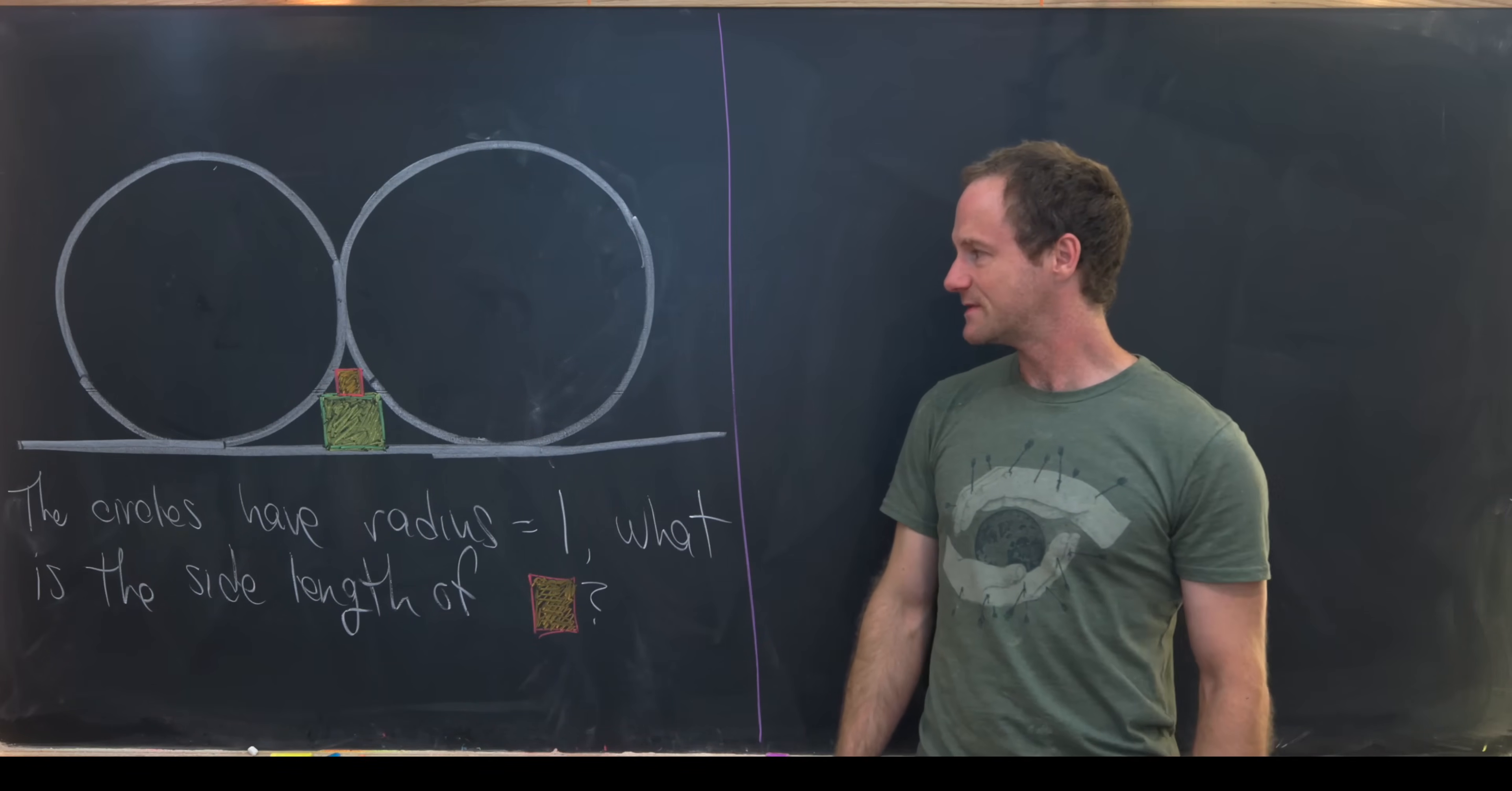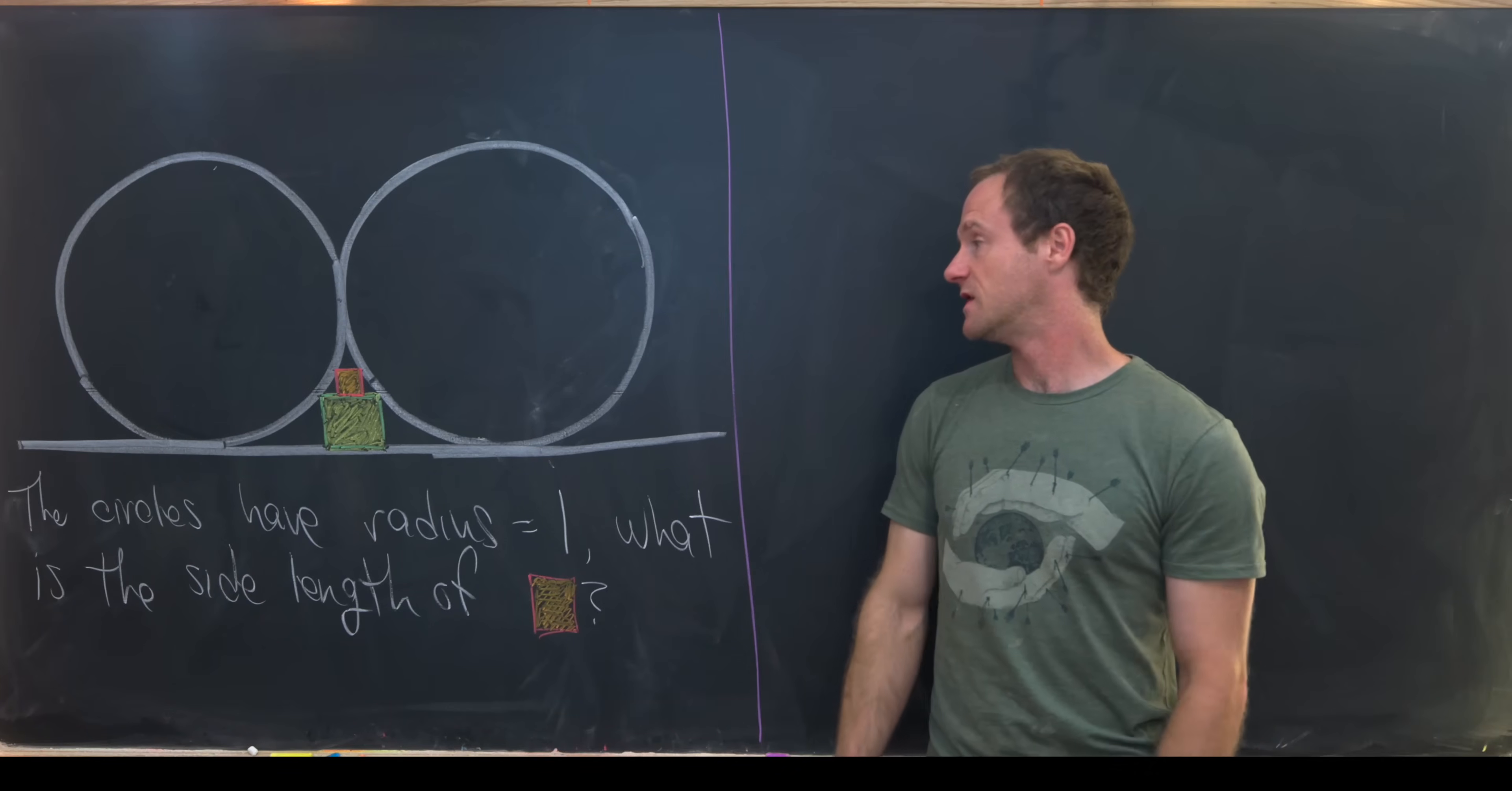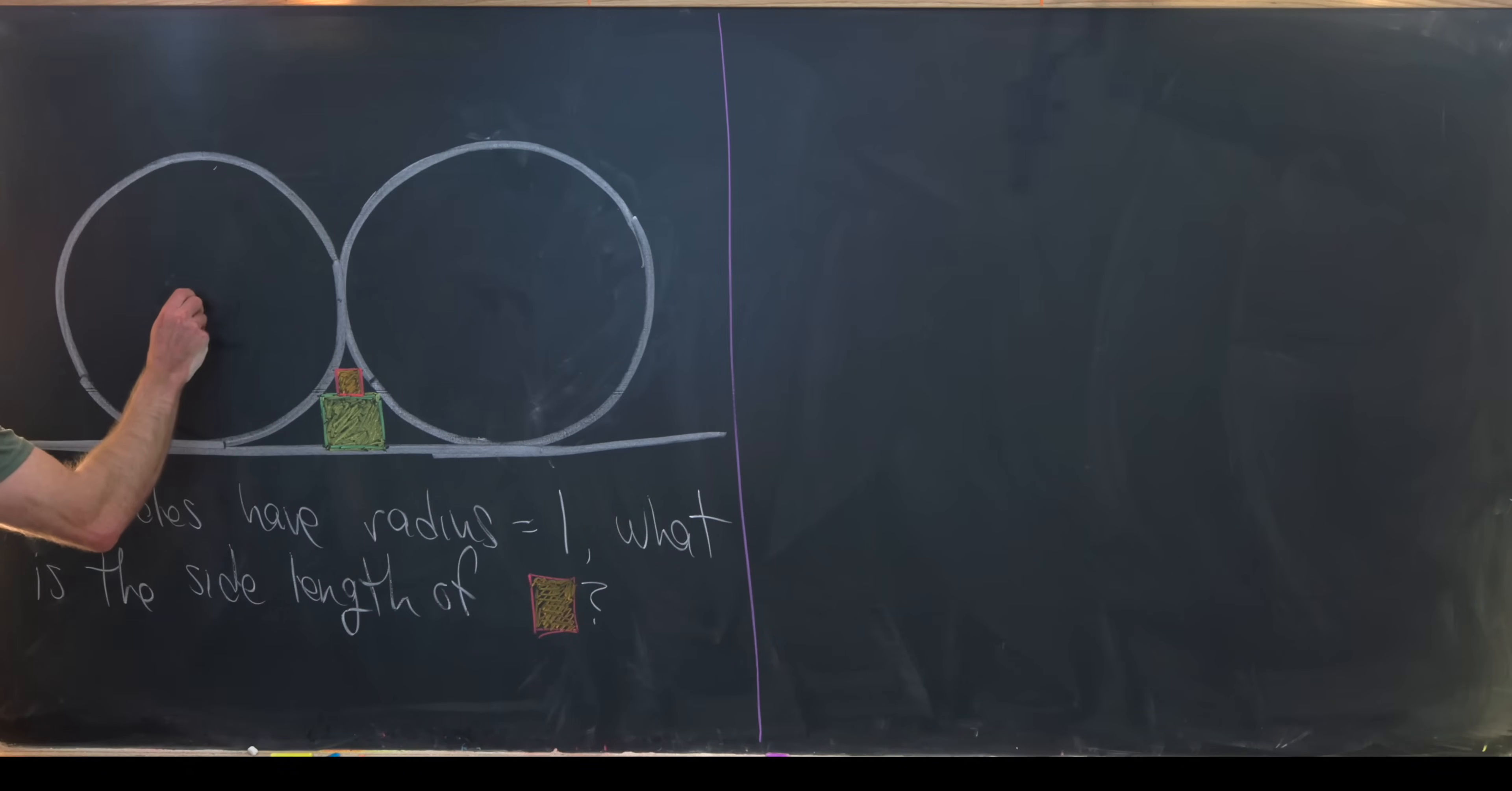And what's nice about this is we don't have to do anything fancier than just the Pythagorean theorem a couple of times. So let's get to it. Let's go over to this left circle, although you could do this with any of the circles, and draw a center point and then draw a radius from that center to this intersection point with the yellow square.